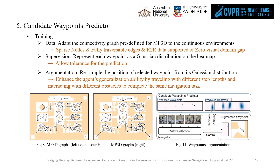As shown in Figure 11, when training the agent for VLN, we also experiment with resampling the position of the selected waypoint from its Gaussian distribution as an augmentation method.